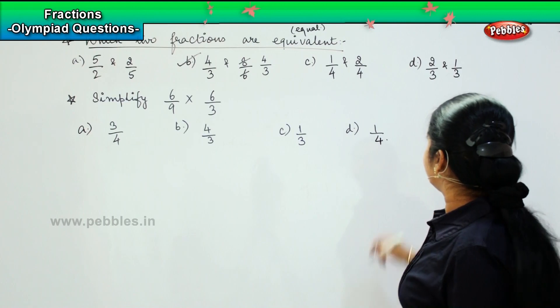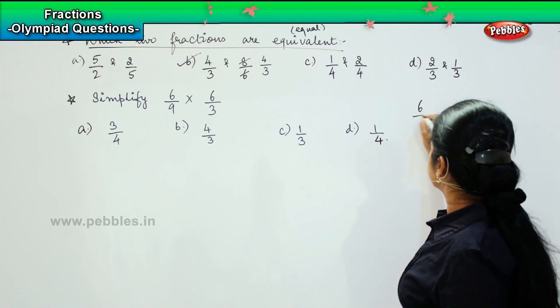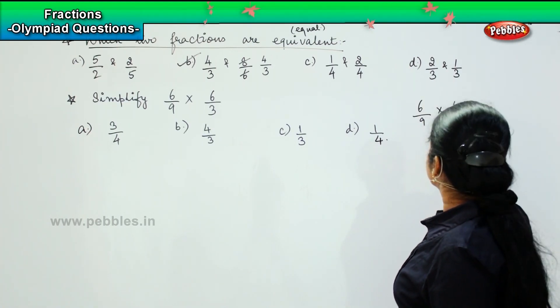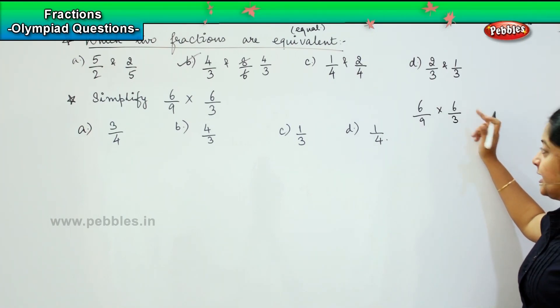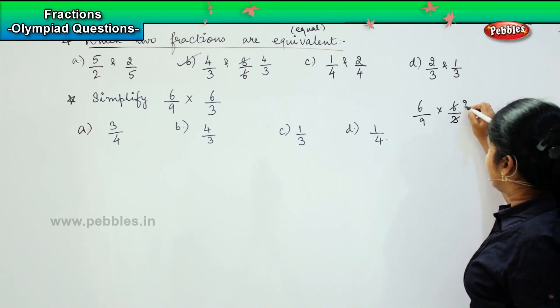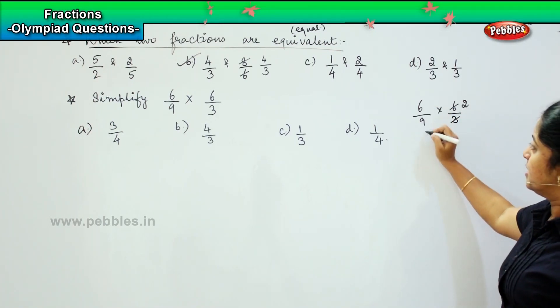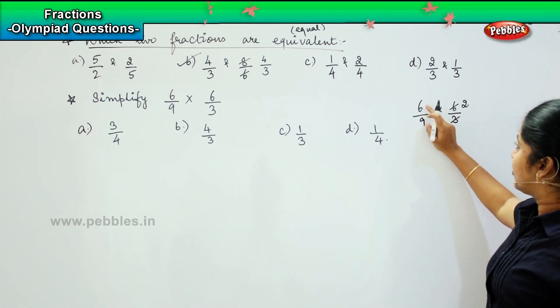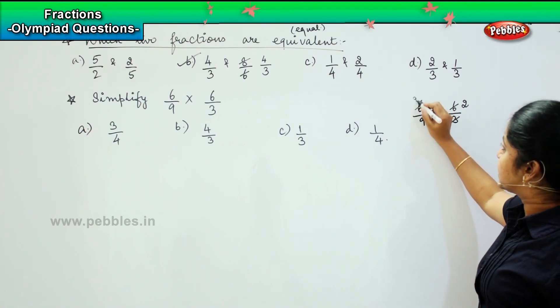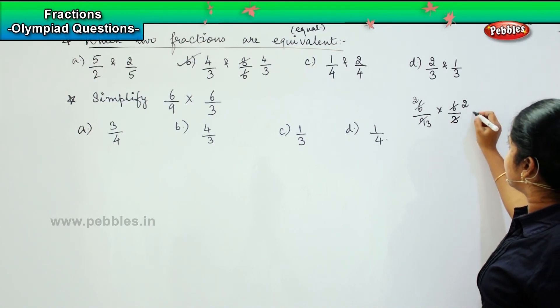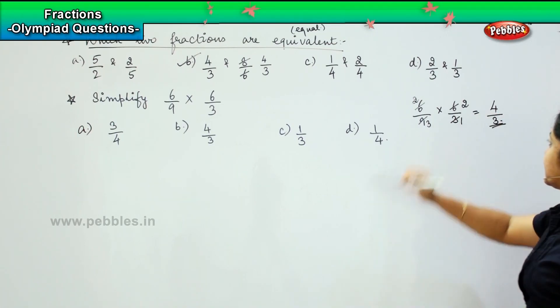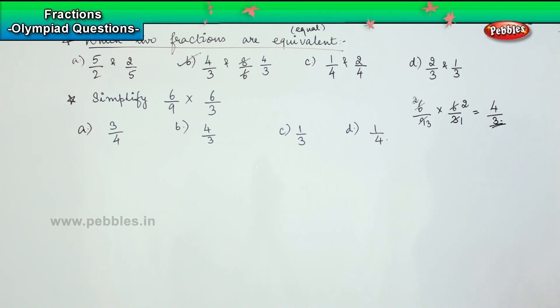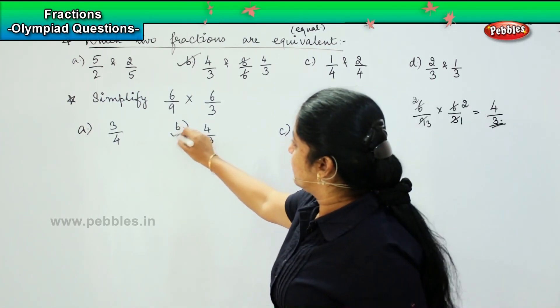Now you have to simplify 6/9 times 6/3. We can simplify by 3: 3 times 1 is 3, 3 times 2 is 6. Here again we simplify by 3: 3 times 1 is 3, 3 times 2 is 6, 3 times 3 is 9. This becomes 2 times 2 is 4, and 3 times 1, so this is written as 4/3, that is option B.